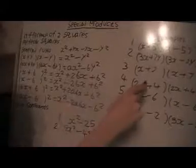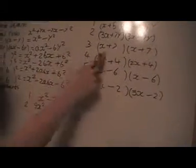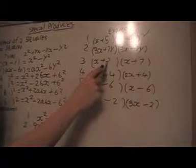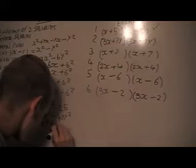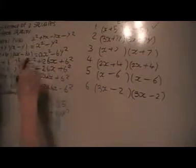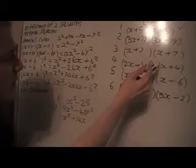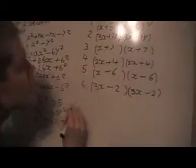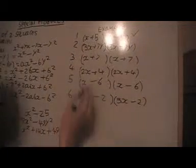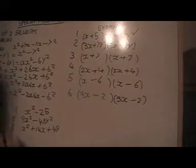For example 3, I use the (x + b)² formula. I square the first term to get x squared. Then I take 2 times b — which is 7 — multiplied by x to get 14x. Then I square the last constant to get 49. So the answer is x squared plus 14x plus 49.